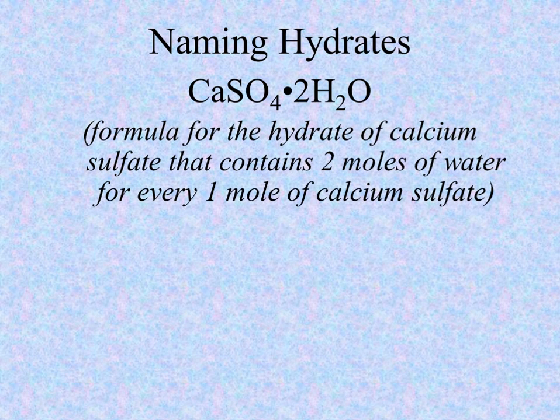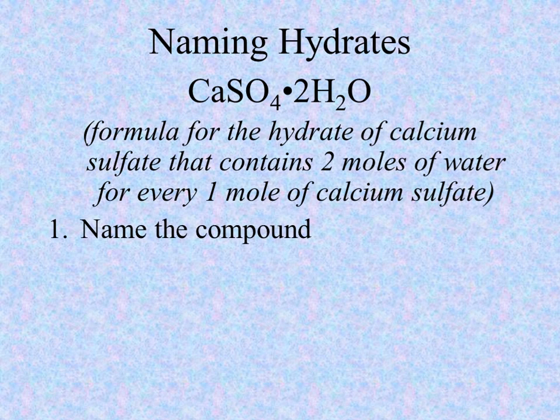What this formula is showing us is that for every unit, or every mole's worth, of calcium sulfate that is present, there are two units or two moles of water present. So it's a one-to-two ratio — for every calcium sulfate, there are two waters.